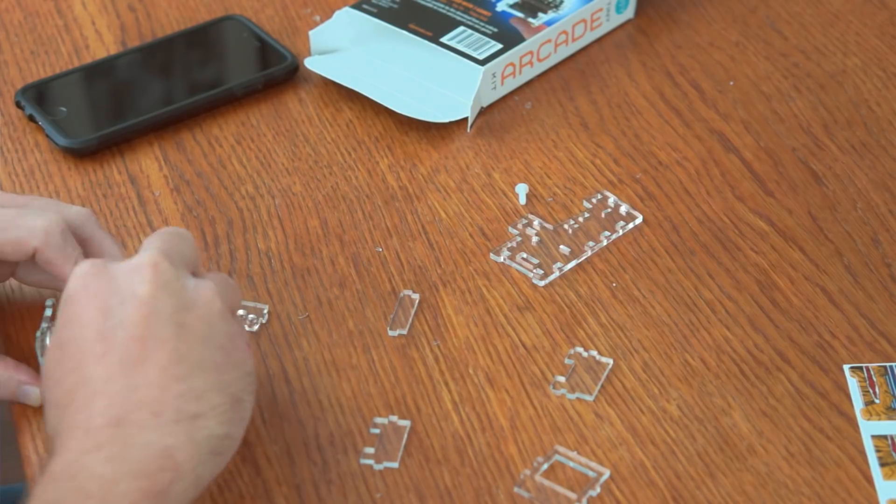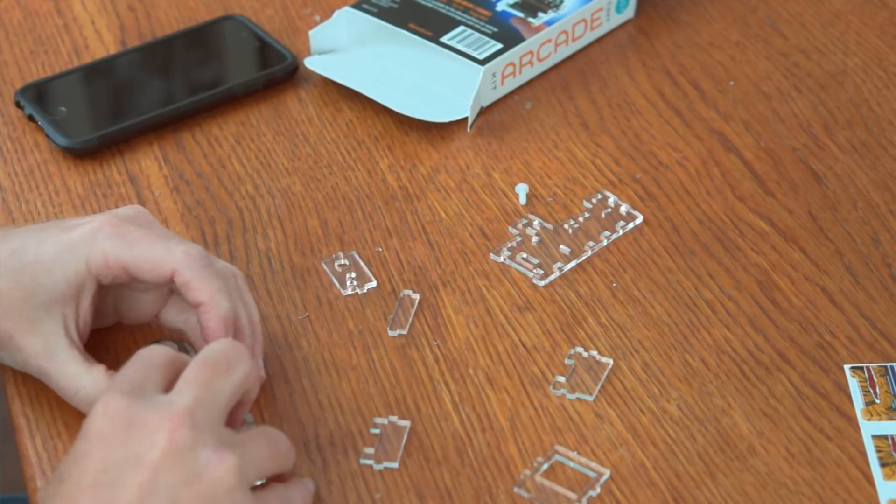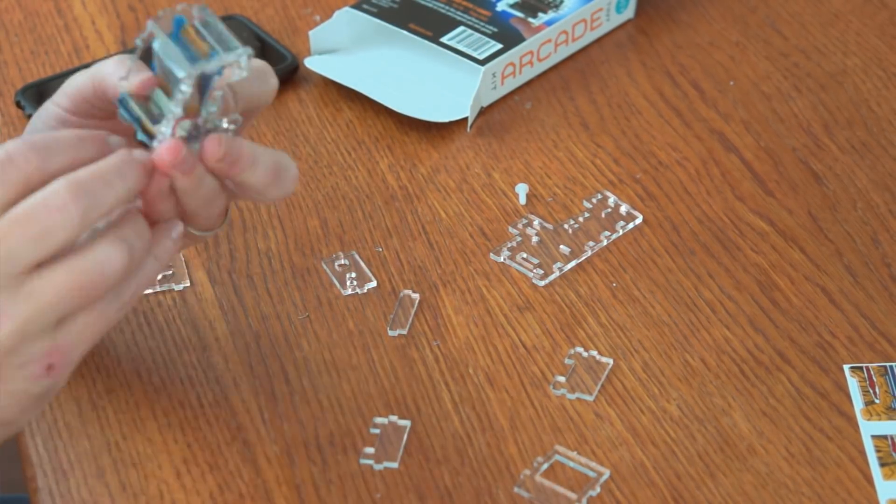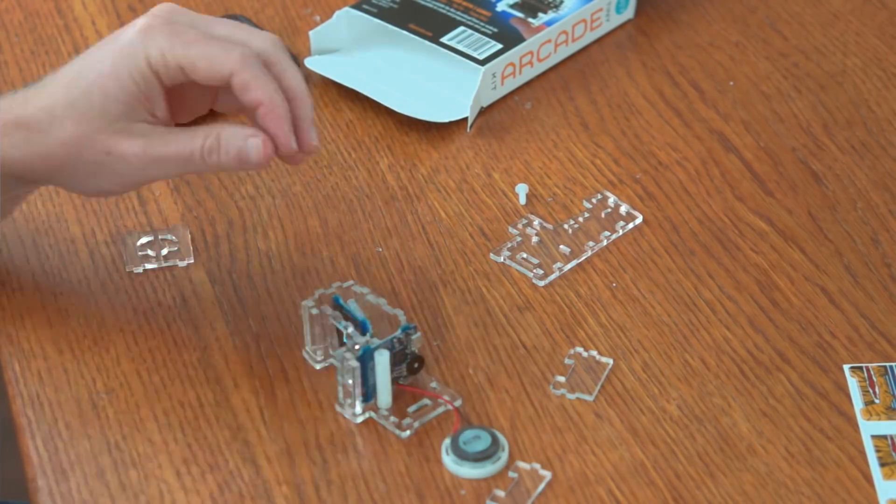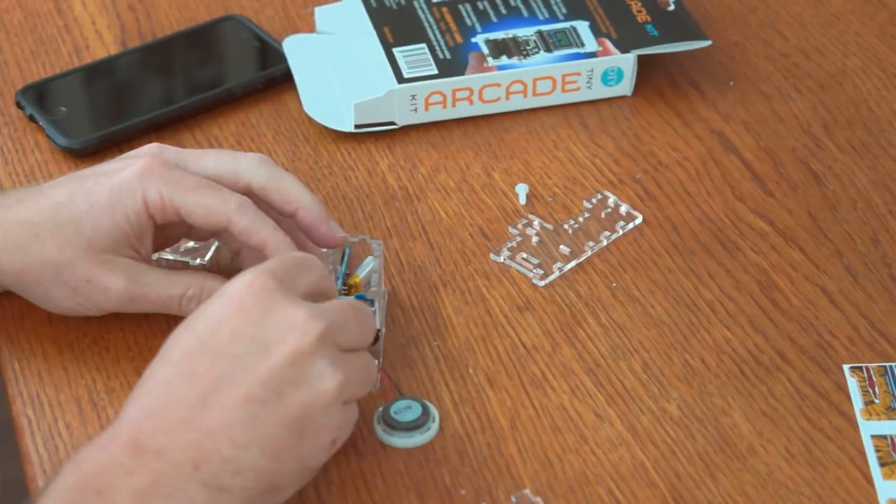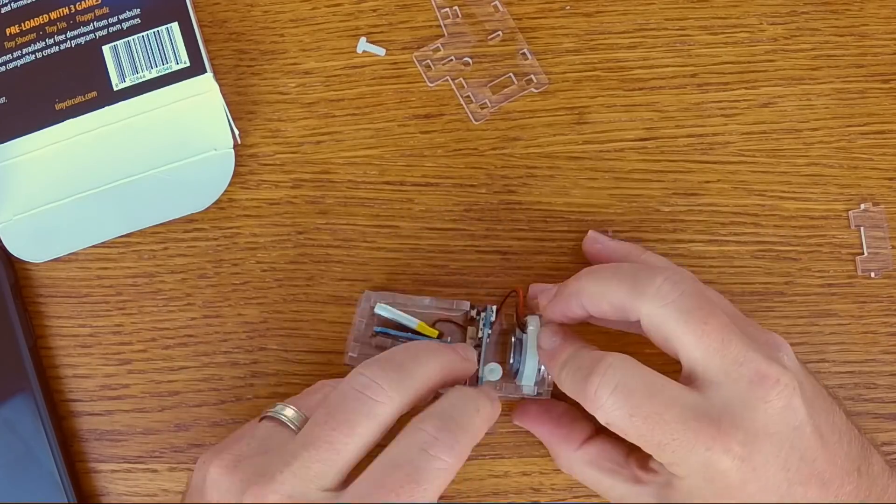Here you can see me sliding everything in. All the different acrylic parts have a tab and slot design so they all fit together. Every once in a while, I'm referencing the instructions on my phone. I'm taking a look at the actual box for a reference of what parts go where.